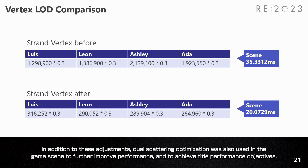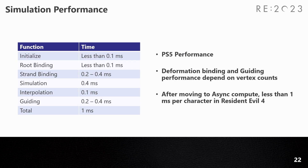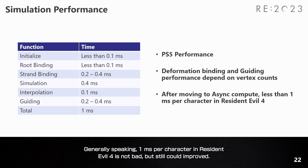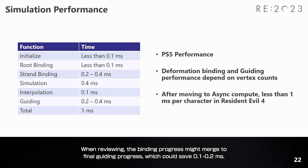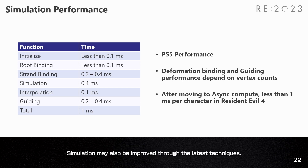In addition, dual-scattering optimization was also used in the game scene to further improve performance and achieve the title's performance objectives. For PS5 simulation performance, 1 ms per character in Resident Evil 4 is not bad but could still improve. It depends mostly on vertex count. Half of the time is used for strand position bending and strand guiding interpolation. When reviewing, the bending progress might be merged into the final guiding progress, which could save 0.1 to 0.2 ms. Simulation may also be improved through the latest technologies.